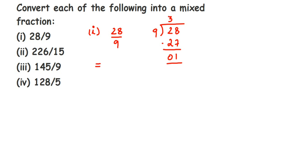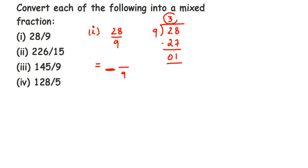In a mixed fraction you have a whole number and a fraction. Looking at 28 by 9, the denominator is 9, so in the mixed fraction the denominator will also be 9 — whatever number is dividing stays as the denominator. The whole number is the quotient, which is 3. The numerator is the remainder, which is 1. So we get 3 and 1/9.